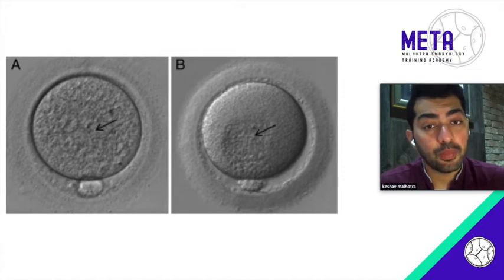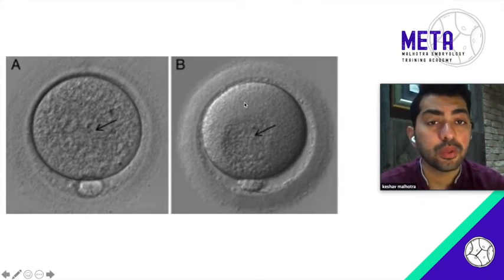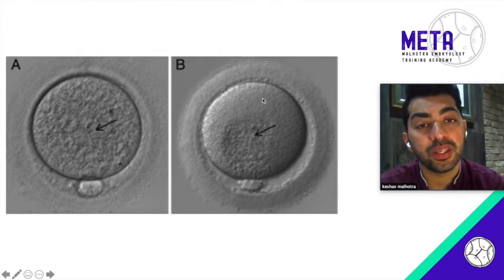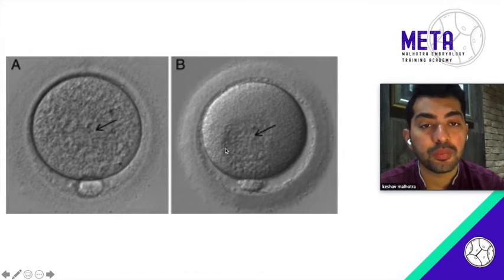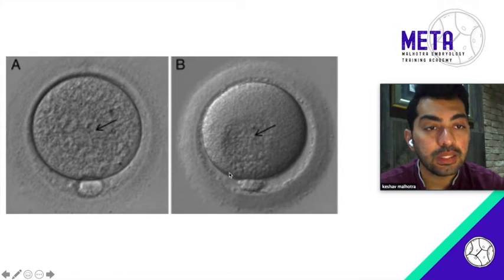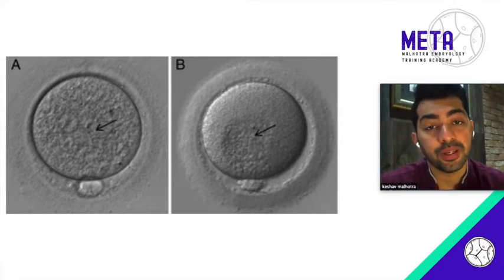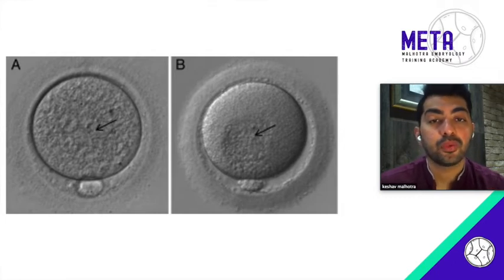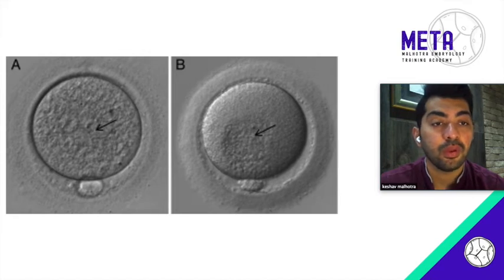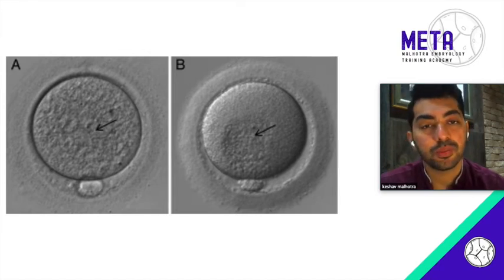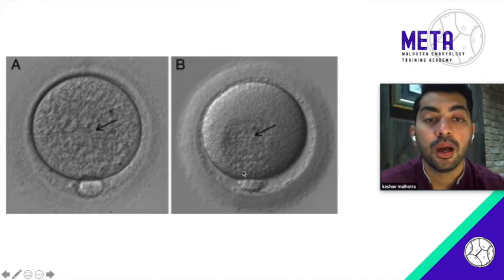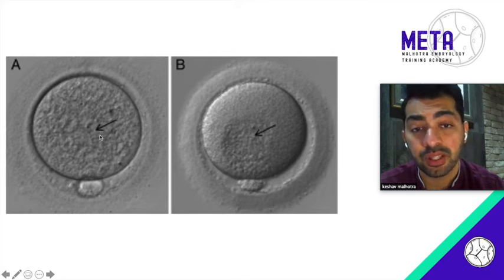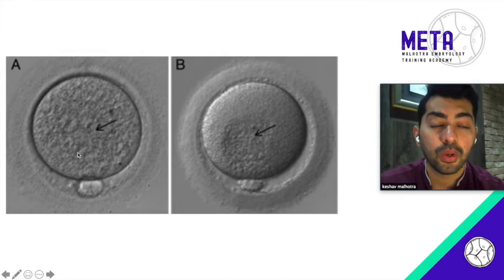Cytoplasmic maturity is also very important. A normal mature cytoplasm is moderately granular, as you can see where the cursor is moving. When there is an aggregation visible in the cytoplasm, it signifies that cytoplasmic maturity has not been achieved even though nuclear maturity has been achieved, evidenced by the polar body. In such cases, if conception doesn't occur, try extending the stimulation by one day — from nine to ten days — as extra gonadotropins can help the eggs achieve cytoplasmic maturity. Diffuse granularity or a diffuse granular congregation within the cytoplasm is not a good sign and will not yield the best outcomes.